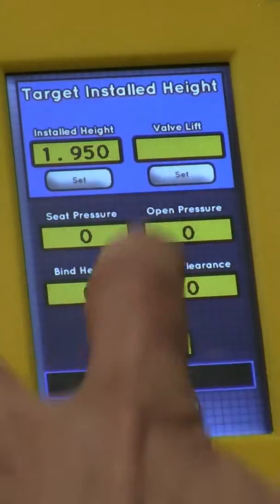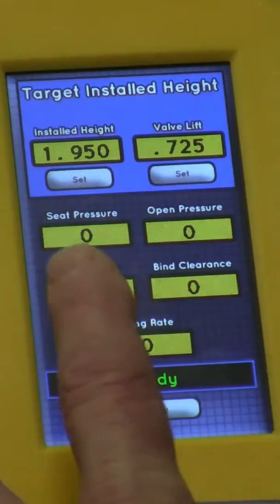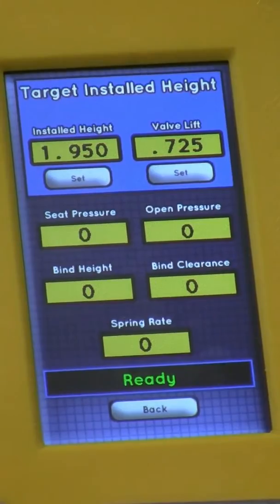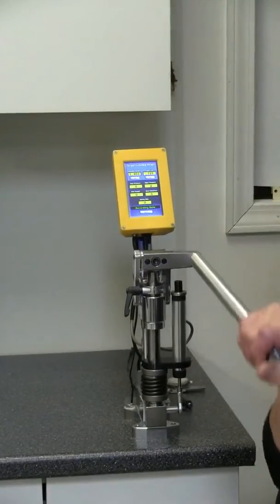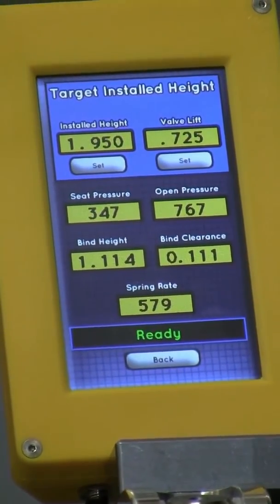In the target installed height screen, you type in the target installed height you want to test at, then type in the valve lift. Pull the handle in one steady motion until the spring is stacked solid then release. Within three seconds it will give you the seat pressure, open pressure, bind height, bind clearance, and spring rate.